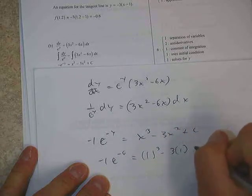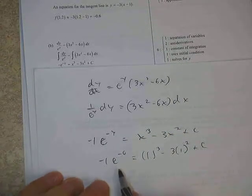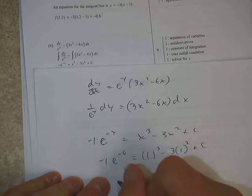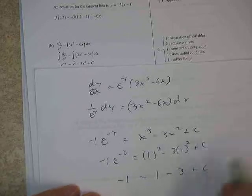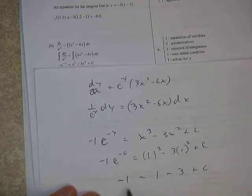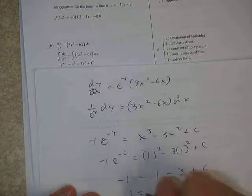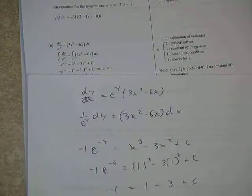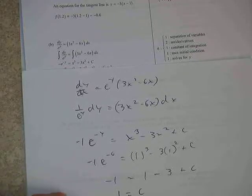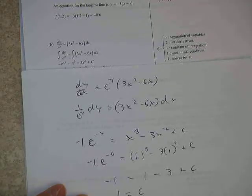And then the initial condition again was (1, 0). So plugging in a 0 here and a 1 here, we would wind up with e to the 0, which is 1, but it's negative. So negative 1 over here. We'd have 1 minus 3 over here. Ultimately, this would be negative 2. Added to the other side, we'd get 1 equals c. All right. And that's worth a point. Last point is for solving that equation for y.